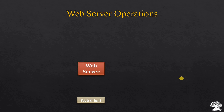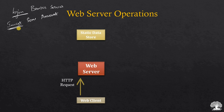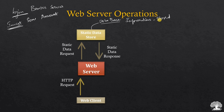Let's walk through a scenario. Imagine you are trying to log in to your bank's web application. Initially, the web client sends an HTTP request to the web server. The web server first requests static data from the data store — meaning the database where information is stored. The static database sends back a response, and this response is displayed in your HTTP browser. This is like opening your browser and typing in a URL such as sbi.com.